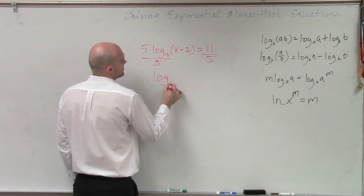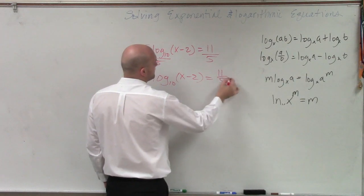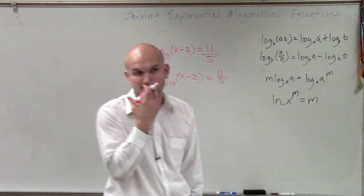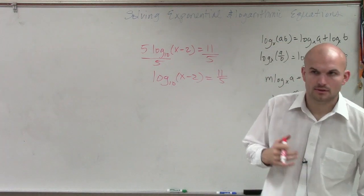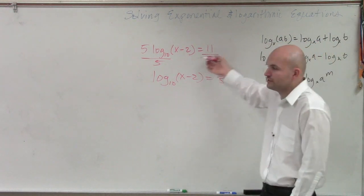So I have log base 10 of x minus 2 equals 11 over 5. Then, now, how am I going to solve for this? How do I solve for this logarithm?